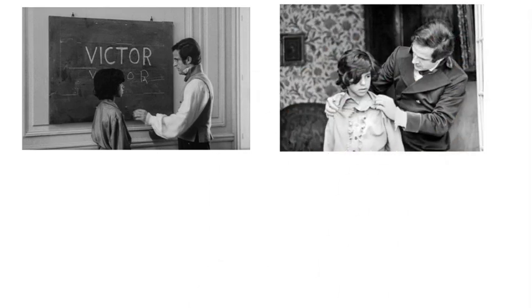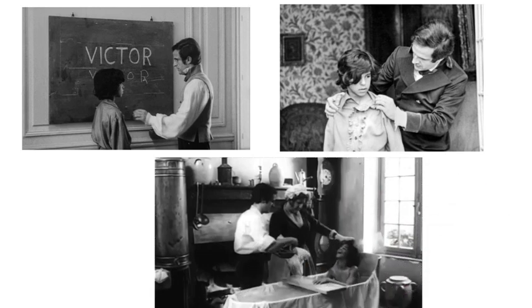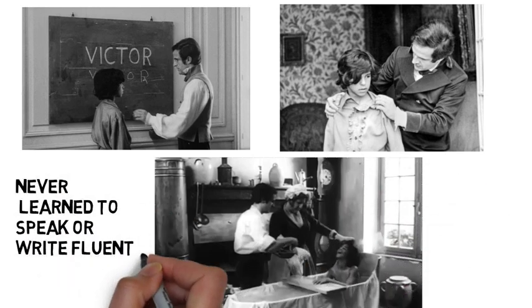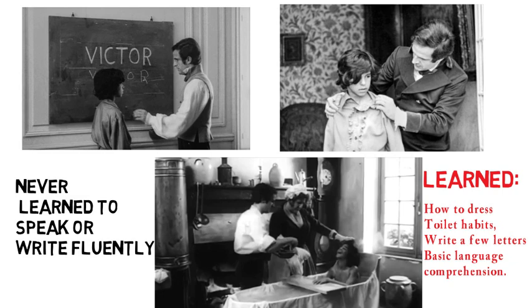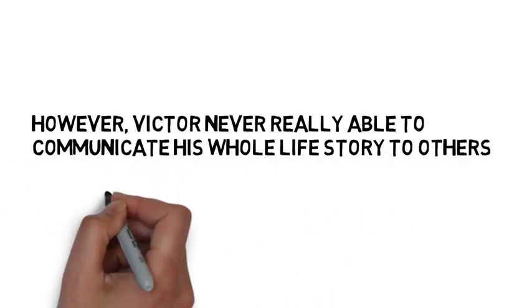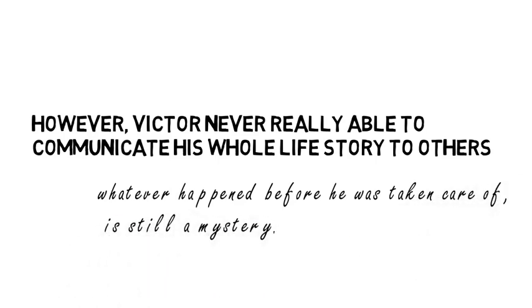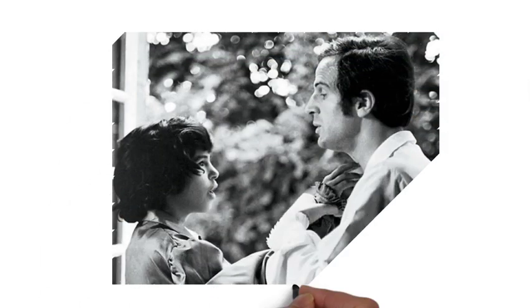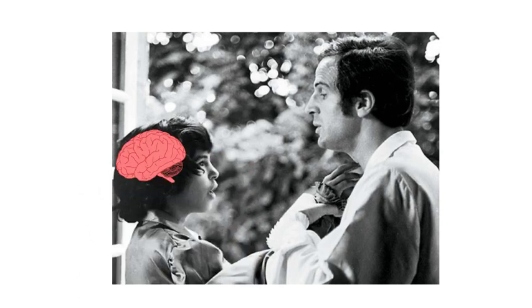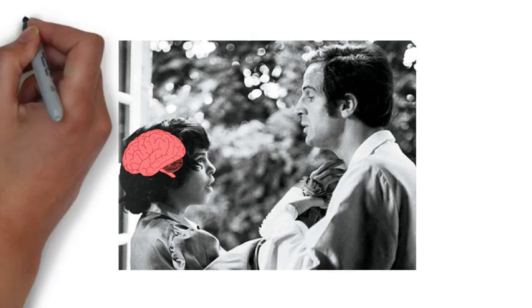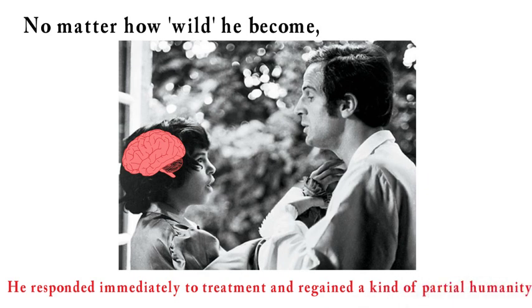A lot of experts helped to educate him, and one physician gave him the name Victor. However, all their programs were met with mixed success. Victor never really learned to speak or write fluently, but he learned how to dress, learned civil toilet habits, could write a few letters, and acquired some very basic language comprehension. Therefore, Victor wasn't able to tell his whole life story to others, so whatever happened before he was taken care of is still a mystery. It was also stated in his case study that he probably suffered irreversible functional brain damage from the isolation that he experienced. That's why hanggang siya ay namatay, he never really mastered communicating with people. However, no matter how wild he became, he responded to treatment and regained a kind of partial humanity.